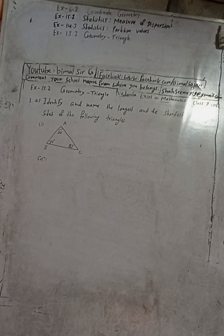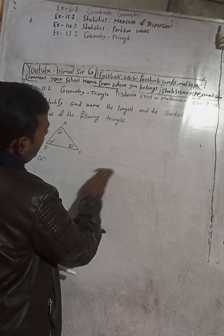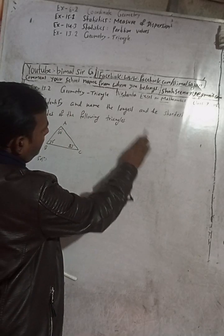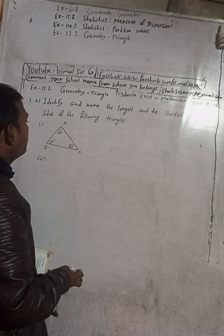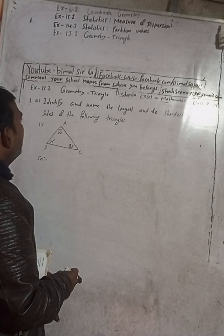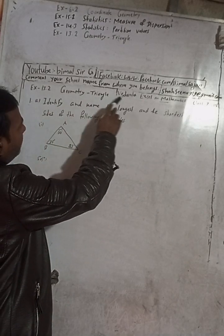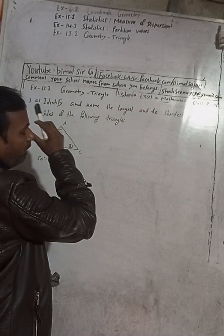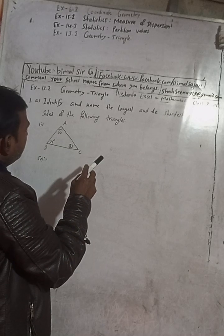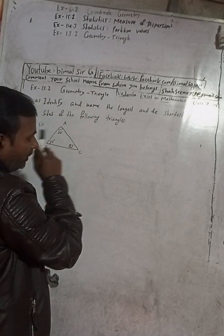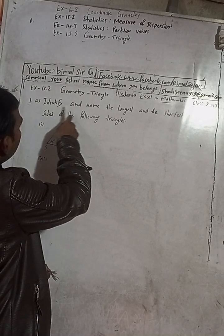Hi Class 9 and 10 students, welcome back to Mimersarj's YouTube channel. In this chilly cold season, I am here to warm up your days and nights with exciting content. We are solving mathematical solutions for Class 9 and 10. This is Question 1, Exercise 13.2, Geometric Triangle from Vedant Excel in Mathematics Class 9, compulsory maths. Don't forget to check the playlist on Mimersarji for a lot of solutions.